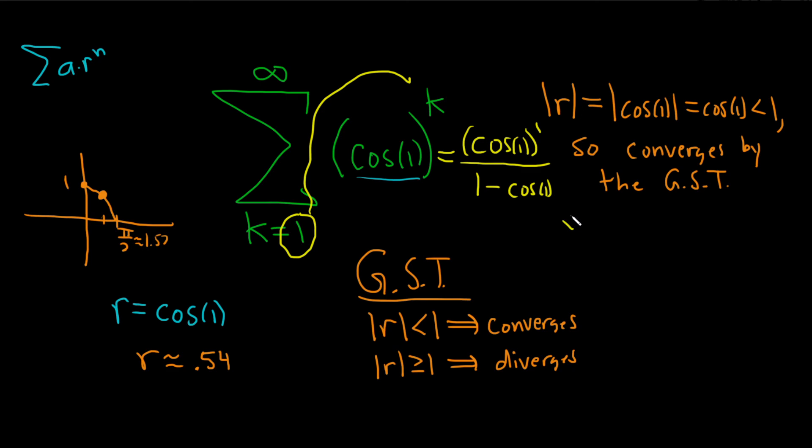So we can rewrite our answer in a prettier way: cosine of 1 over 1 minus cosine of 1. That would be the sum of this infinite series.